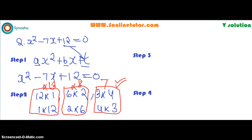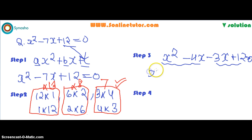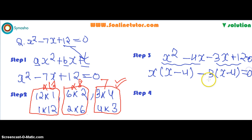To write down the factors, we split the middle term. The important thing is that when you add the split terms they must give minus 7x. So we write x squared minus 4x minus 3x plus 12 equals 0. Then we group into two pairs: from the first two terms, take x as common — giving x(x minus 4). From the next two terms, take minus 3 as common — giving minus 3(x minus 4). Taking (x minus 4) as common from both terms gives (x minus 4)(x minus 3) equals 0.